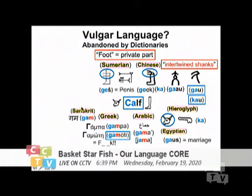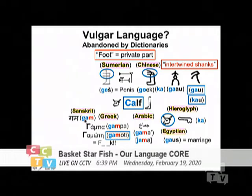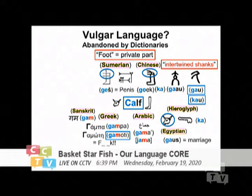In Sanskrit it's the same. 'Gam' is the root for both the foot movement and for sexual intercourse. So why is this foot-and-sexual-intercourse connection consistently existing across different families? Arabic, Greek, and Sanskrit, according to linguists, should belong to different families. But why are they all preserving the same sound, having the same meaning at a very base level — not in the literary level, but on the street level?